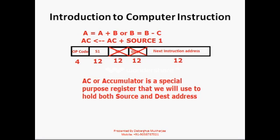Now we are introducing a special register called accumulator, or AC. It is a very special register used to hold both source and destination address. If we have any instruction in the format A equals A plus B, or B equals B minus C, you can see that A appears on both the left side and right side of the expression — meaning source1 and destination are the same. In the second example also, source1 and the destination are the same.